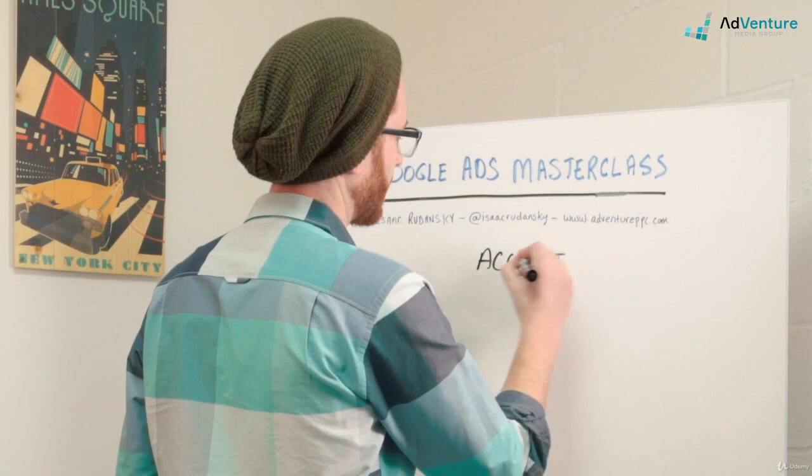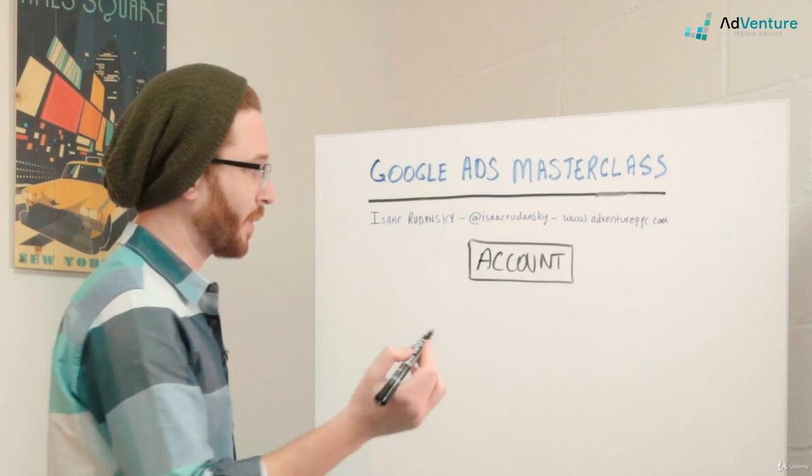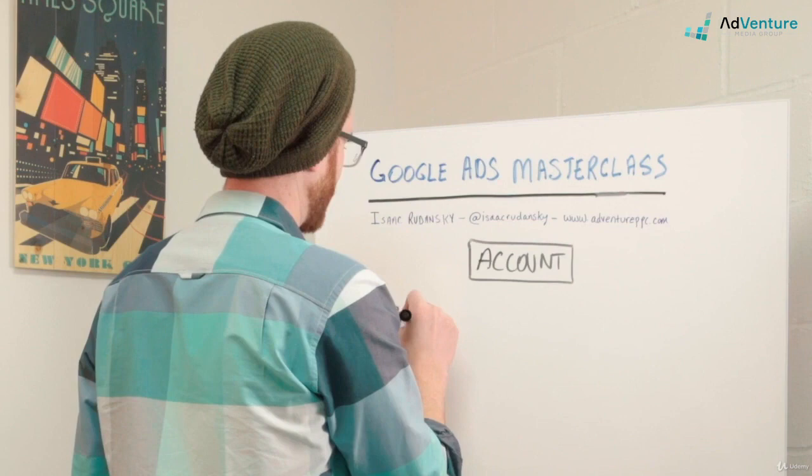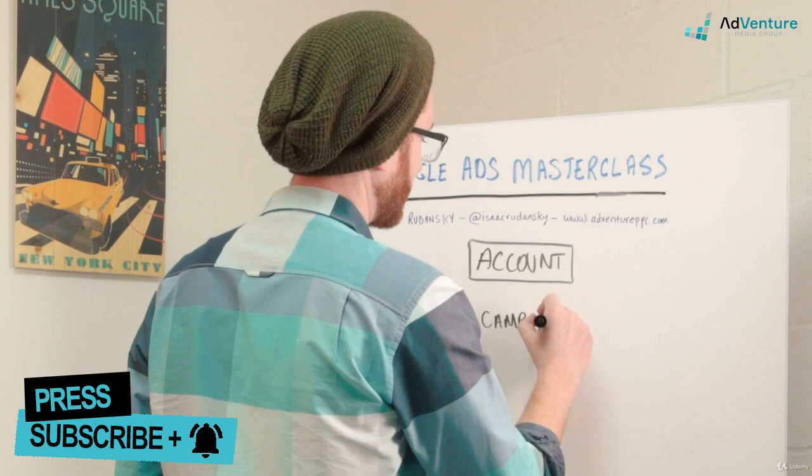Then you have campaigns under your account. You have all sorts of campaigns. You could have many different campaigns. You could have hundreds of campaigns. You could have campaigns that are different campaign types. You could have search campaigns, display campaigns, retargeting campaigns, Google App campaigns, Google Shopping campaigns, so on and so forth.